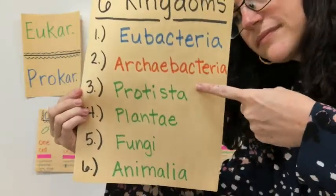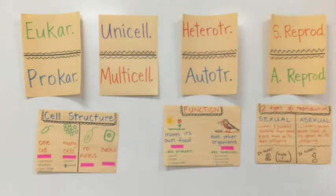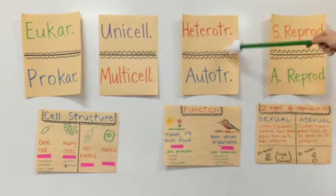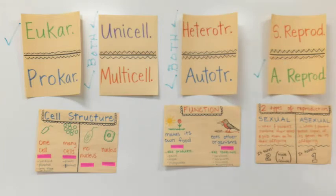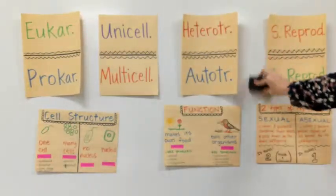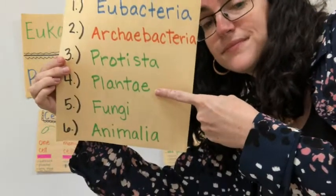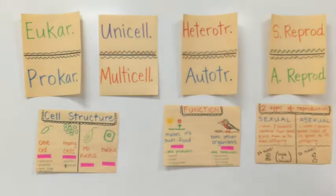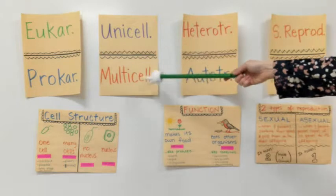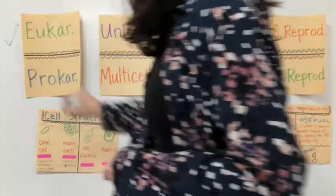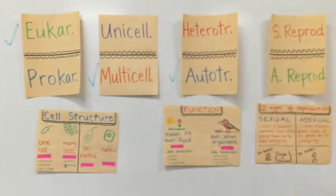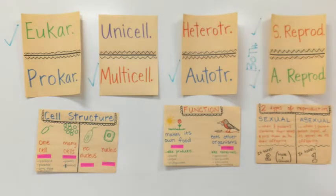Moving on to the protista kingdom: this is an example of eukaryotes, and there are examples of both unicellular and multicellular organisms, as well as both heterotrophs and autotrophs, depending on the species. They also reproduce asexually. With the plant kingdom, this is another example of eukaryotes. They are all multicellular and all autotrophs because they make their own food from sunlight. However, there are examples of plants that reproduce both sexually and asexually, depending on the specific species.